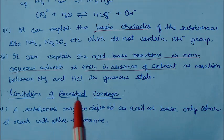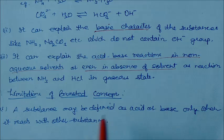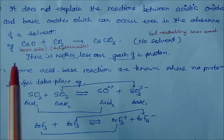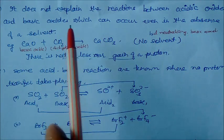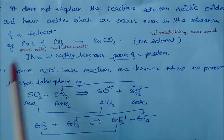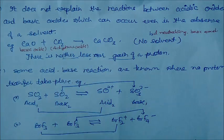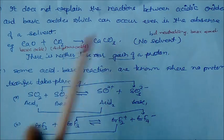Now for the limitations of the Bronsted-Lowry concept. First, a substance may be defined as acid or base only when it reacts with another substance; otherwise the concept has no meaning. Second, it does not explain the reaction between acidic oxides and basic oxides, which can occur even in the absence of solvent. For example, an acidic oxide and a basic oxide give a salt and neutralize each other, but Bronsted-Lowry cannot identify which oxide is acidic and which is basic.